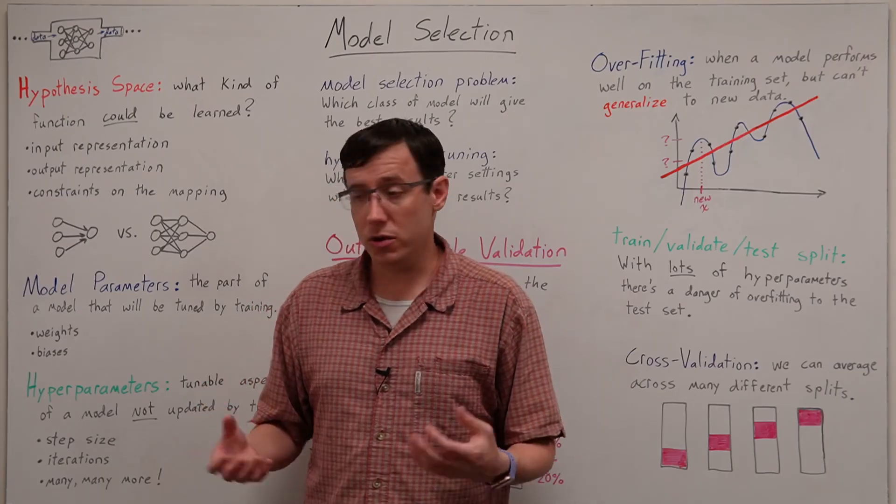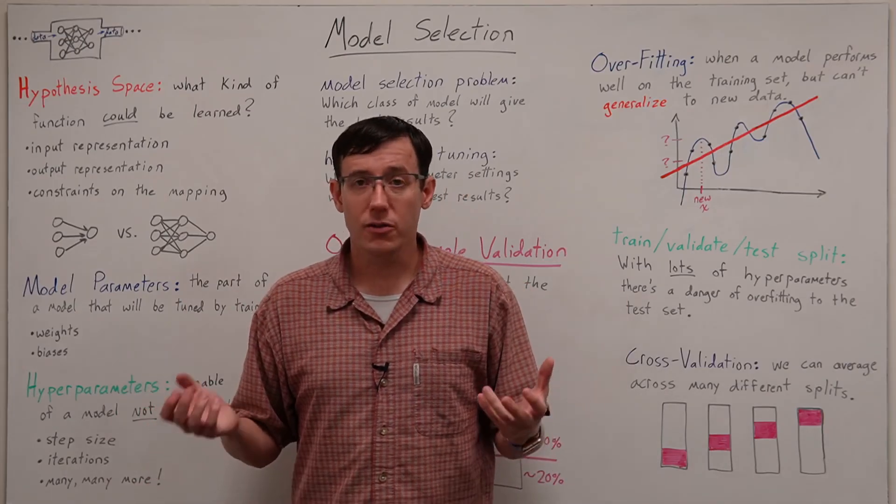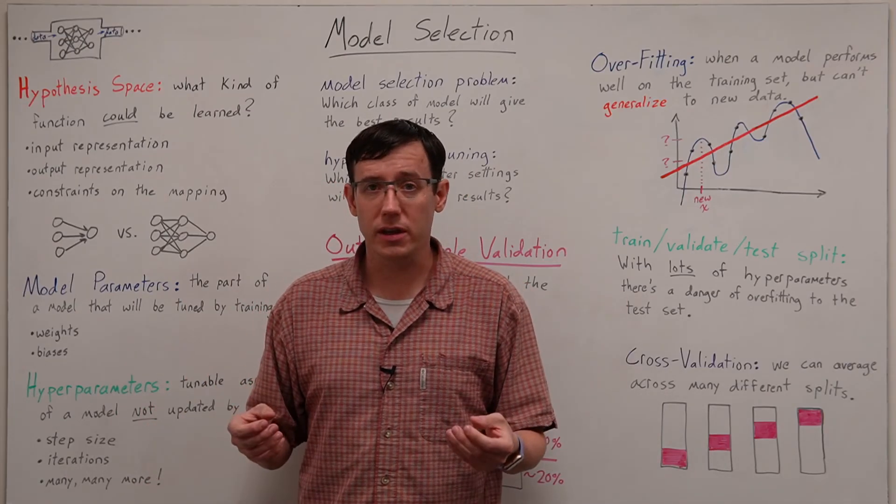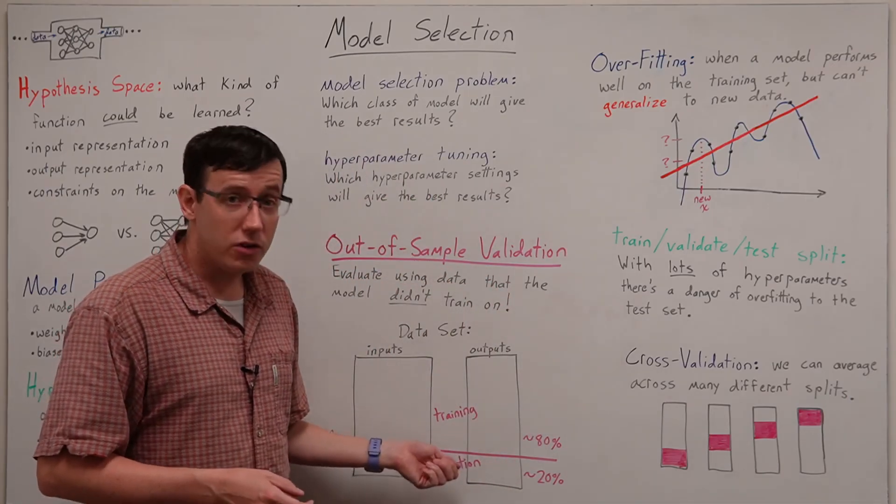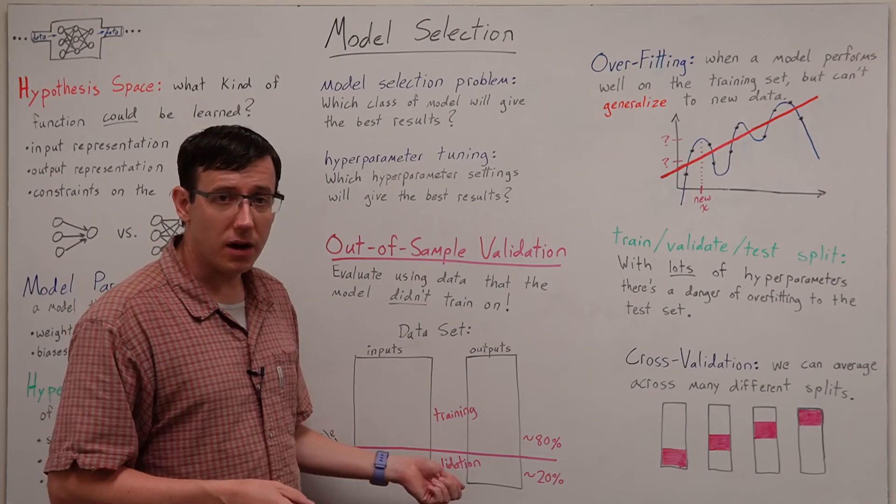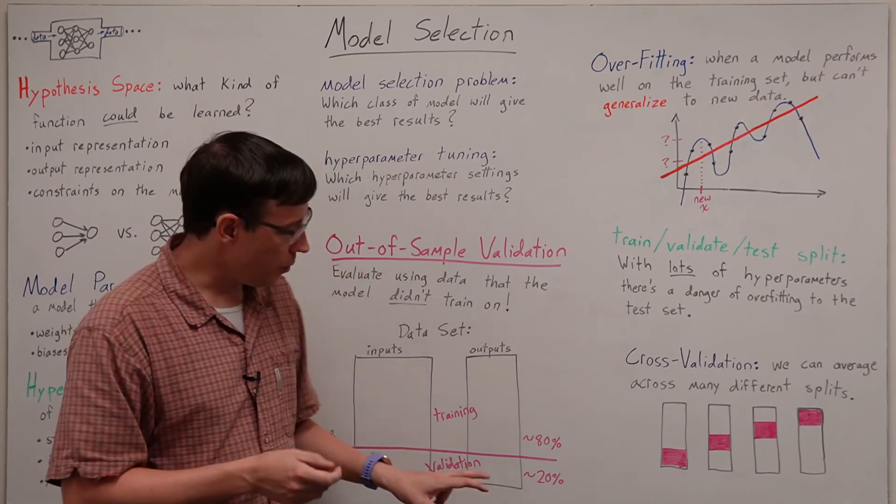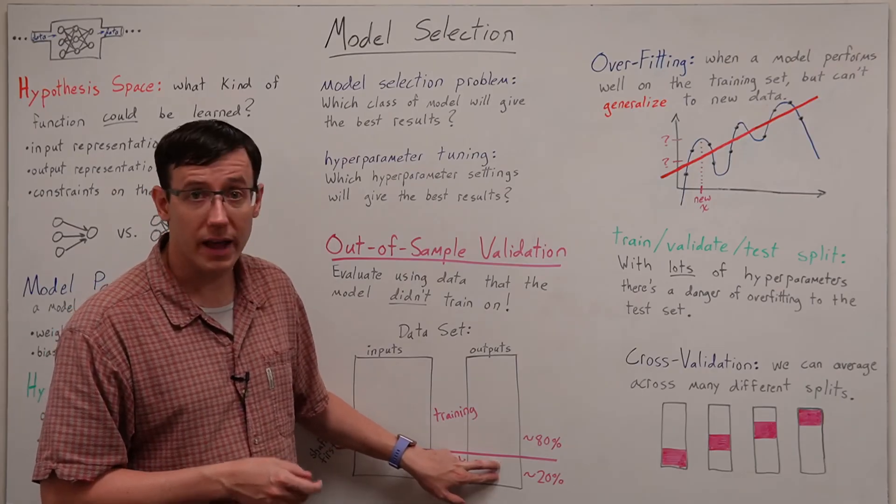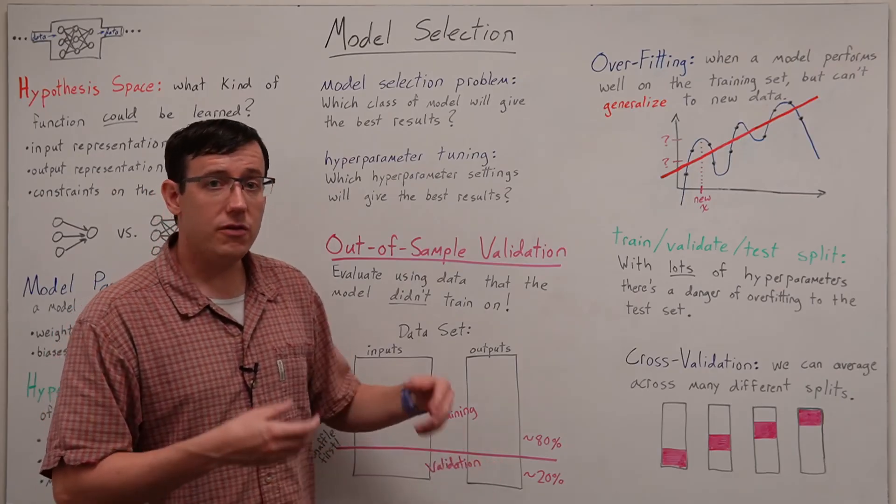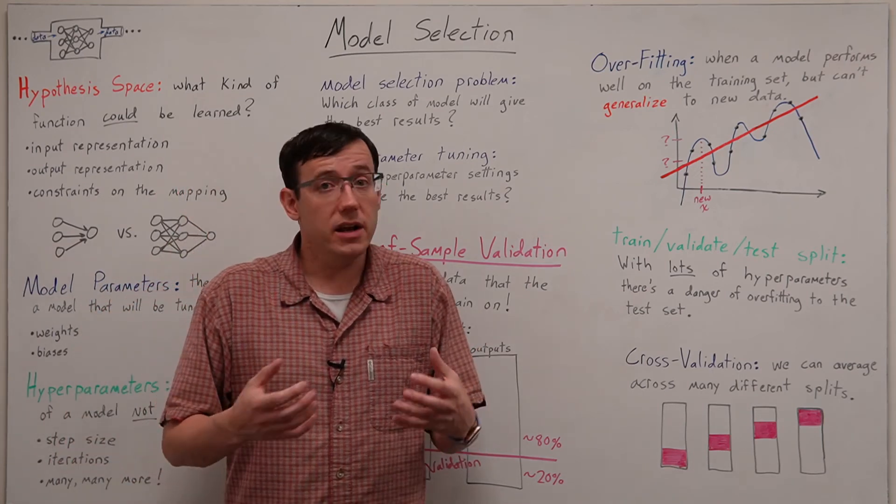But if we end up trying out tons of different values for several different hyperparameters there's a danger that we'll actually start overfitting to the testing set because the choice of hyperparameter is now being optimized based on the predictions on the held out set and if that's the case it may make sense to split the data even further.